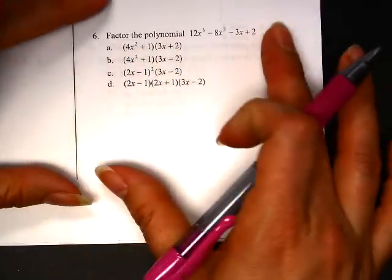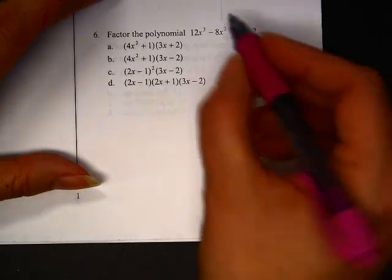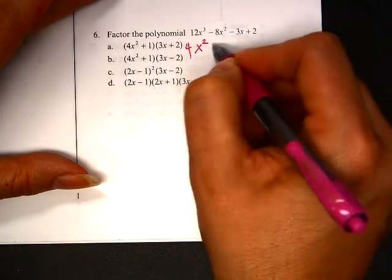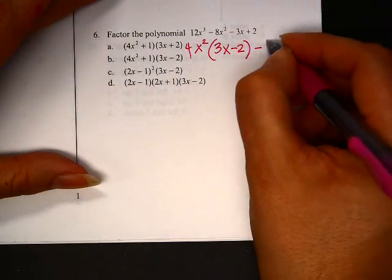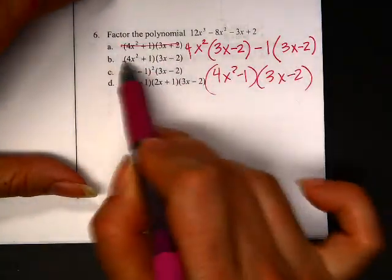All right, factor the polynomial. This one here looks like it's nice and pretty. So, let's see if we can do a little factor by grouping here. Let's pull out, what, an x squared. And the biggest number I can pull out of both of those would be a 4. I'd be left with 3x minus 2. And, oh, oh, pull out a negative. 3x minus 2. What? So, I get 4x squared minus 1 times 3x minus 2.